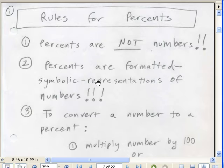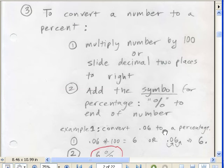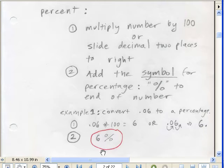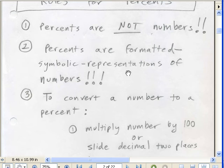We need to talk about percents. I'm going to start over in the PDFs. Here are the rules for percents. Rule number one: Percents are not numbers. They are formatted symbolic representations of numbers. We start off with 0.06 and then we end up with 6 and a percent symbol. This 0.06 means 6 parts out of 100. This percent symbol is a little bit easier sometimes to understand than a decimal.